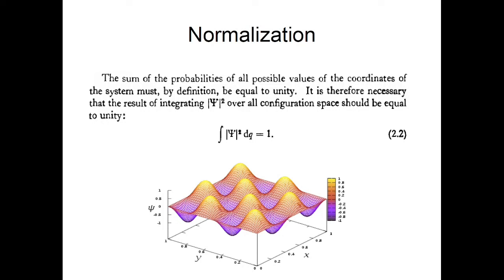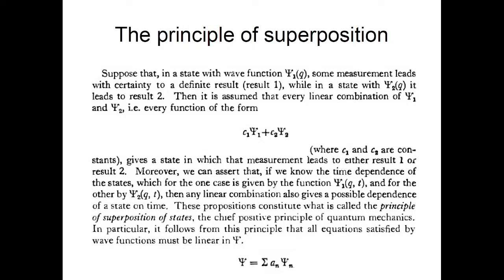There are mathematical properties that the wave function has to respect. One of them is that the sum of probabilities of all values of the coordinates must by definition equal unity. Whatever wave function you are taking into account, in order to assign a physical meaning to it, we have to make sure it is normalized so that the square of the wave function over the whole configuration space sums to one, so that every element has the meaning of a classical probability.